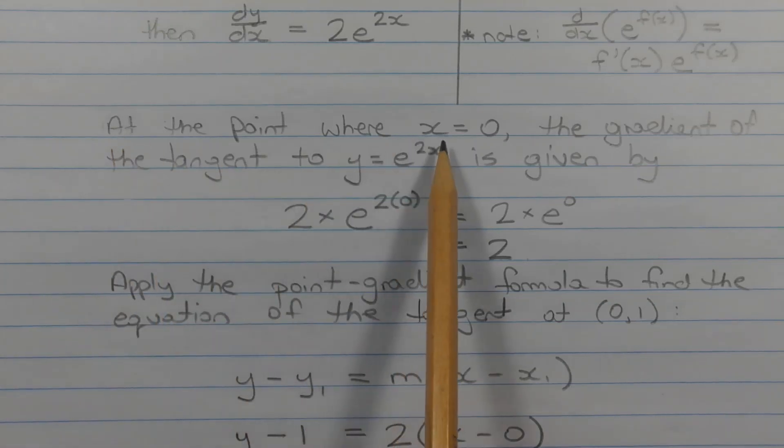At the point where x = 0, the gradient of the tangent to y = e^(2x) is given by 2 × e^(2×0), substituting 0 into the gradient function. That equals 2 × e^0, which equals 2.